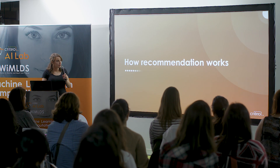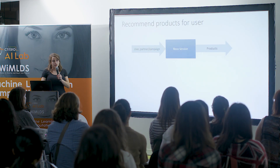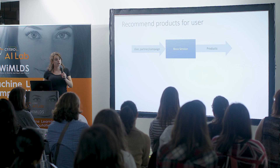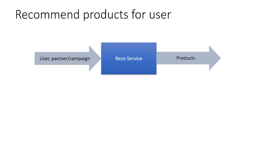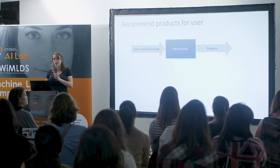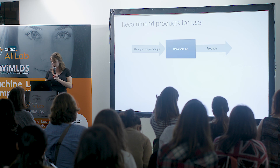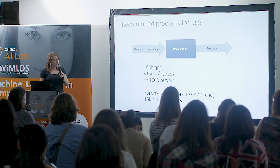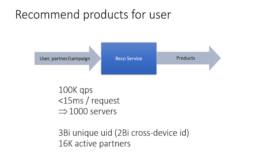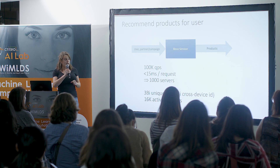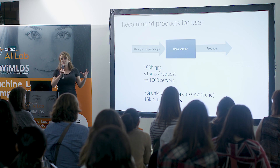Now let's look at how recommendation works. As input, we get a user ID and a partner and campaign. The goal is to get a few products — on average we're asked for five products, but it depends on the size of the ad placement. From the recommendation point of view, after the bid has been won, we receive about 100K queries per second and should reply under 15 milliseconds. For this, we have 1,000 servers worldwide in all our data centers that just do recommendation.